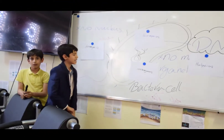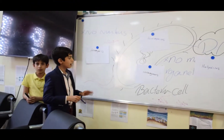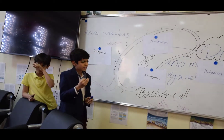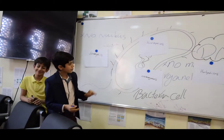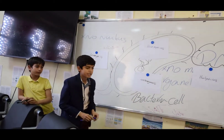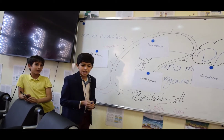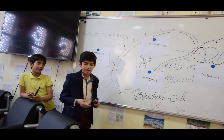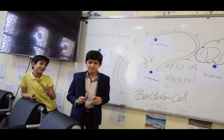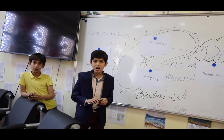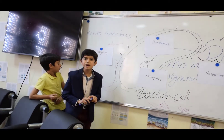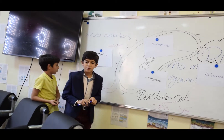You can categorize the archaea into three groups. One of them is methanogens. They can grow and live in places that don't have any oxygen, for example in rivers or water.